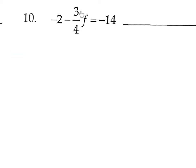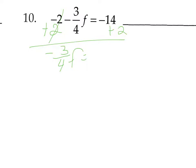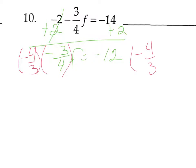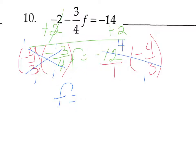Number 10 is the same concept — one fraction coefficient, so we'll use a reciprocal at the end. Get rid of the negative 2 first by adding 2 to both sides. We have negative 3 fourths f equals negative 12. When you have a negative fraction, its reciprocal is also negative, so multiply by negative 4 thirds on both sides. The 12 cancels with 3, and negative 4 times negative 4 is positive 16. So f equals 16.